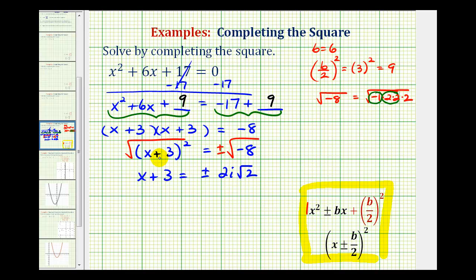And the last step here, to solve for x, we'll subtract 3 on both sides of the equation. So we have x equals negative 3 plus or minus 2i square root 3.